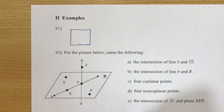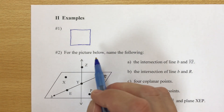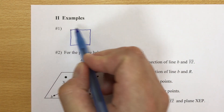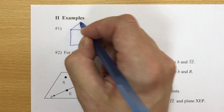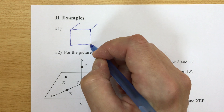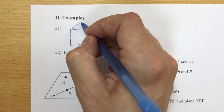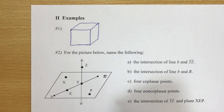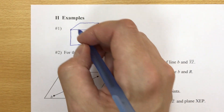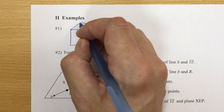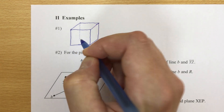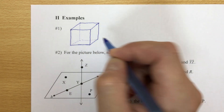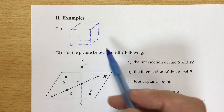Drawing three-dimensionally is very important in geometry and it does take some practice, so don't get frustrated if your cube is not great. I start by drawing a square, and then from three of these points I'm going to draw a slanted segment, trying to draw those the same way. Then I connect across and connect down.